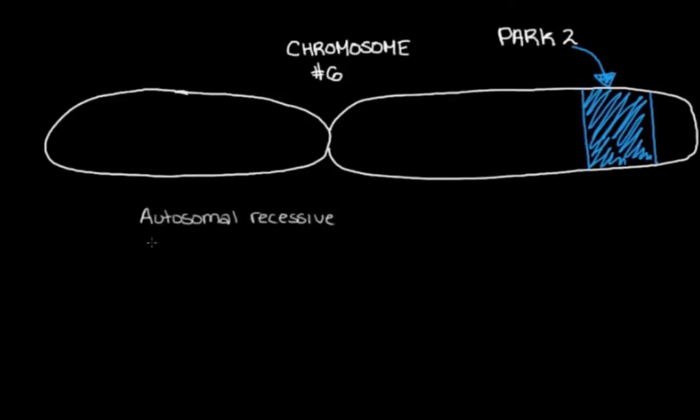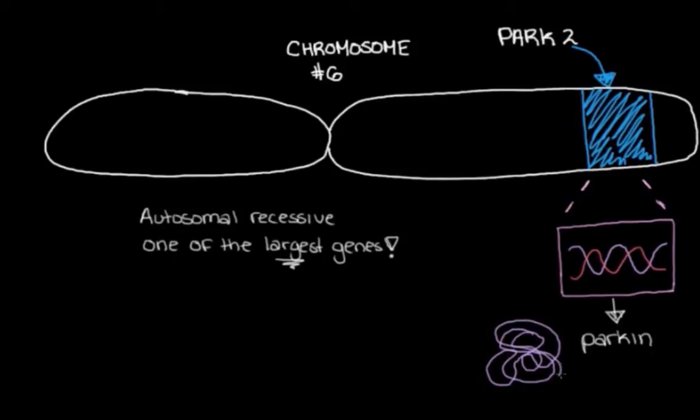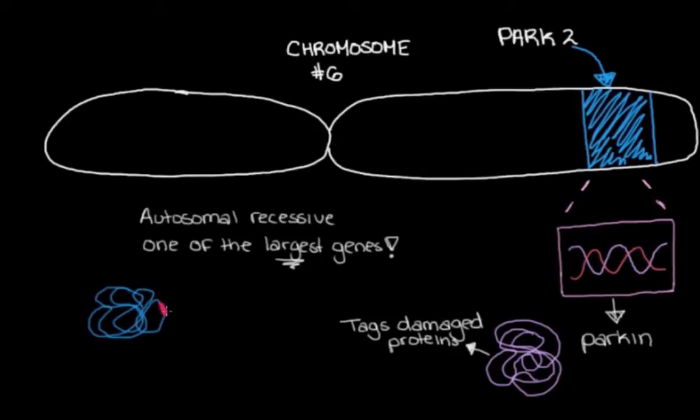And something that's really interesting is that the PARK2 gene, it's one of the largest genes that we humans have in our whole body. So it's one of the biggest genes that we have. So PARK2 encodes for a protein called Parkin. And Parkin has this really important role. What it does is it tags other proteins that are damaged or that we have too many of, they're in excess.